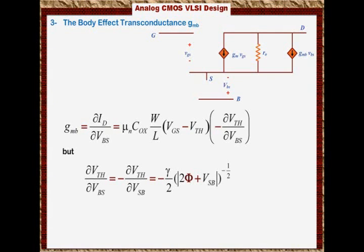So if we substitute this component into the Gmb definition, then Gmb can be expressed as Gm × γ/(2√|2Φ + Vsb|). And this component here is a fraction or coefficient that depends on gamma and Vsb. So we can say that this is η × Gm.